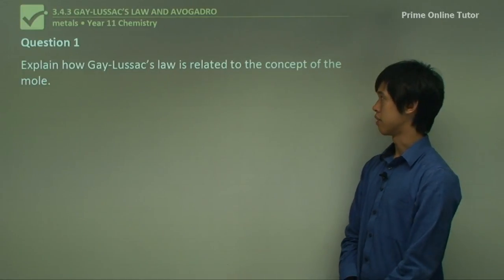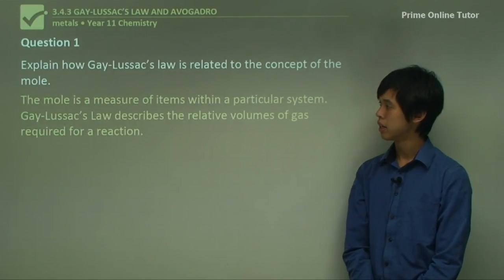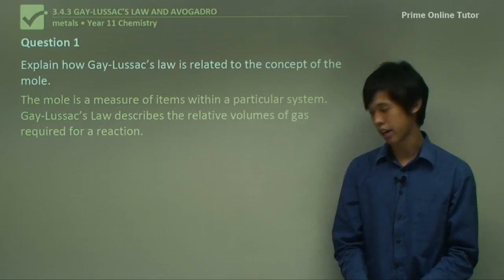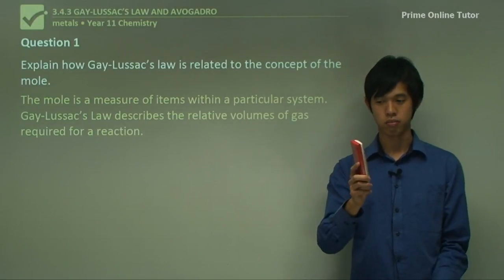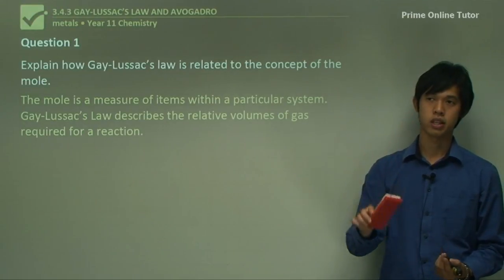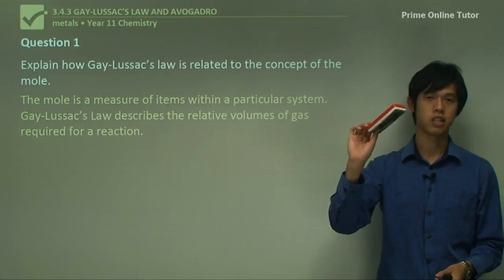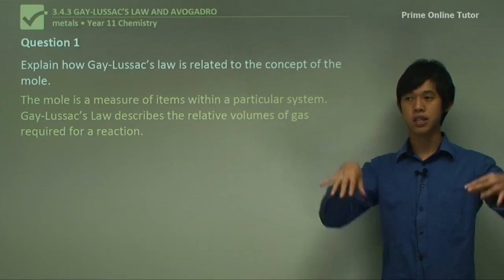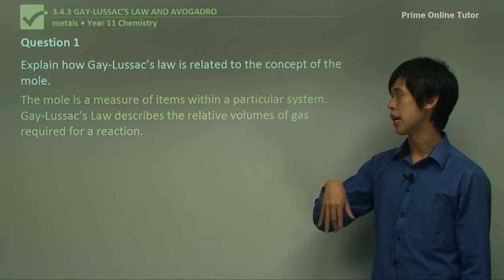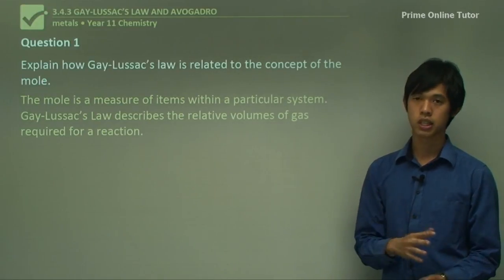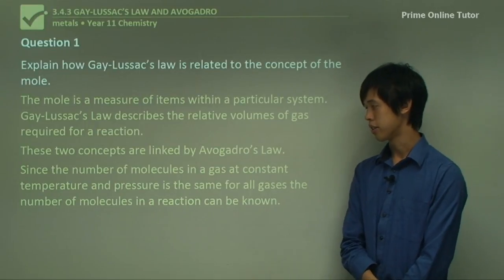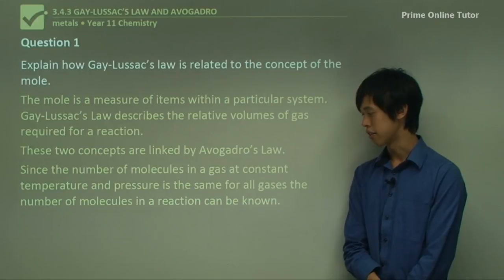So explain how Gay-Lussac's law is related to the concept of the mole. I kind of touched on this, but this is a good time to recap. Well, the mole is a measure of items within a particular system. We can use moles to count anything we want. So I could say there is one mole of erasers in the room, when actually there's only one eraser. But I could use the mole to count how many erasers are in this room. There's 1 over 6.022 times 10 to the 23 moles of erasers in this room. So we just use it to count something in a system. Now Gay-Lussac's law describes the relative volumes of gas required for a reaction. Now, the two concepts are linked by Avogadro's law. Since the number of molecules in a gas at constant temperature and pressure is the same for all gases, the number of molecules in a reaction can be known.